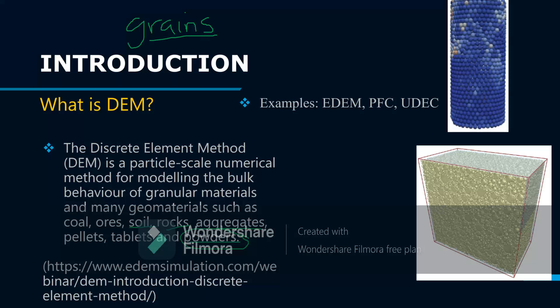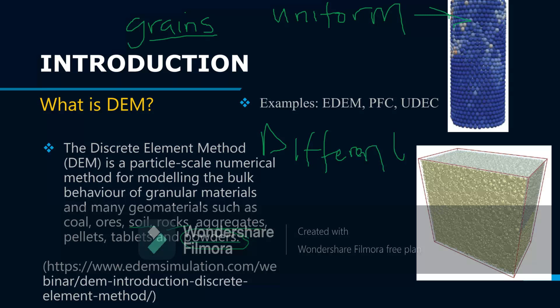The representative particles can be of uniform size or of different sizes, as you can see here. Examples of commercial software include EDM — this is an actual model in EDM — and there are other methods like PFC (Particle Flow Code) and UDEC.